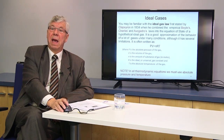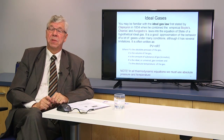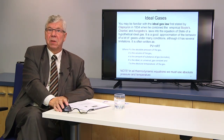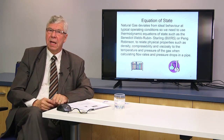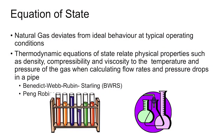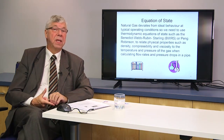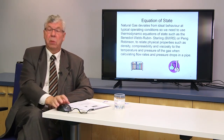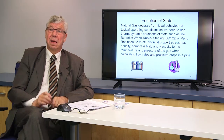Looking at the ideal gas law: PV — pressure times volume — equals N, the number of moles, times the universal gas constant times temperature. We must use pressure and temperature in absolute terms. Natural gas deviates from ideal at common pipeline pressures and temperatures, so instead of the ideal law, we use equations of state such as the Benedict-Webb-Rubin-Starling (BWRS) or Peng-Robinson equations, which better relate physical properties such as density and viscosity to pressure and temperature.